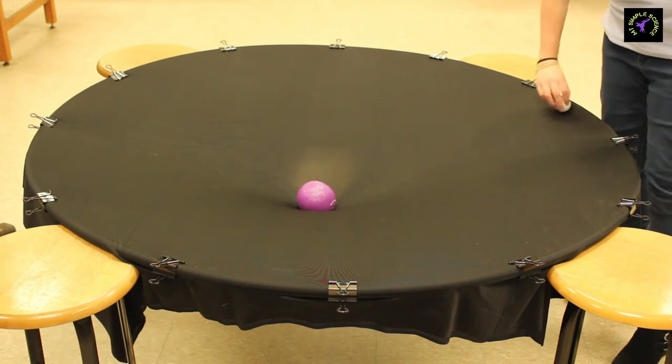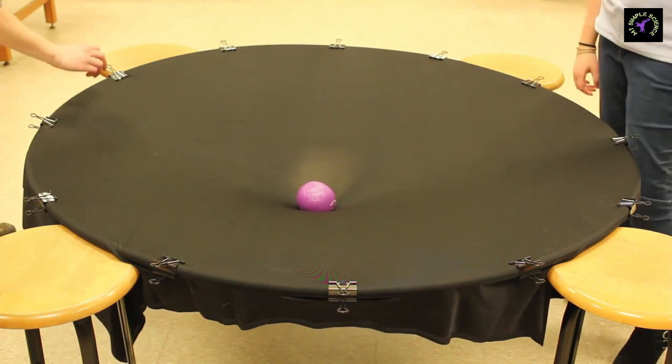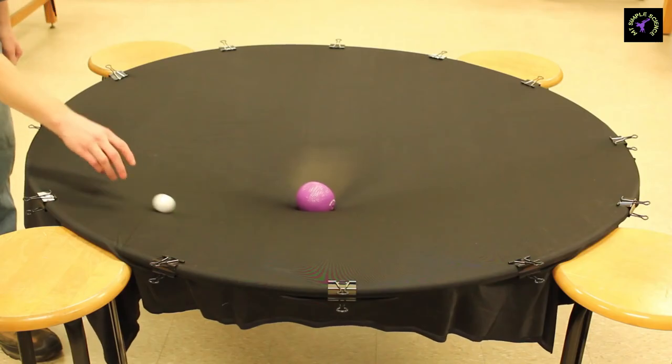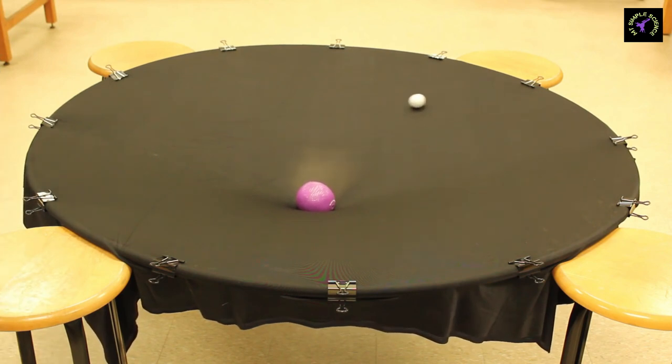If a massive object is placed on a stretched bedsheet, then the object bends that bedsheet. A curve can be seen clearly on the bedsheet. If an object has to travel between any two points on the bedsheet, then the object must cover more distance when the bedsheet is curved than the distance when there is no curve.